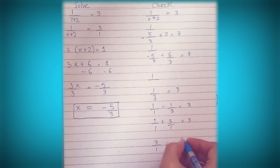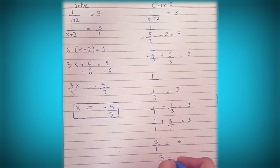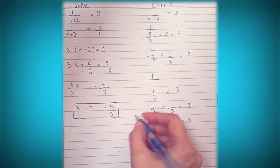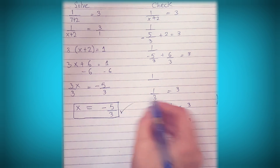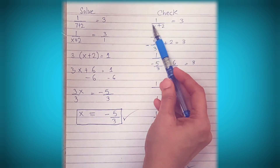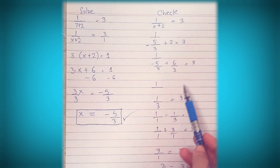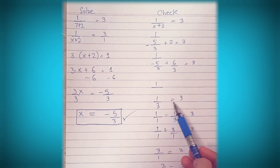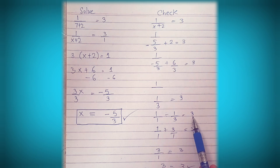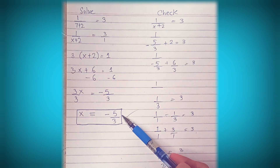So we flip 1 third to get 3 over 1, and multiply: 1 times 3 over 1 times 1. Multiplying across the top gives 1 times 3 equal to 3, and across the bottom 1 times 1 equal to 1. So it's equal to 3 over 1, which is just 3. And 3 equals 3, so it checks out — our answer is correct. This is how you do this type of problem.